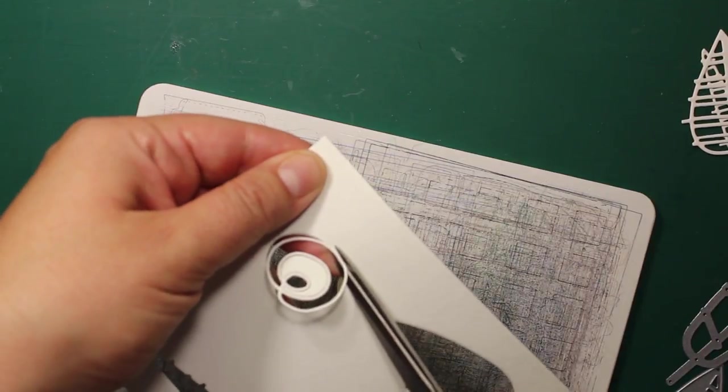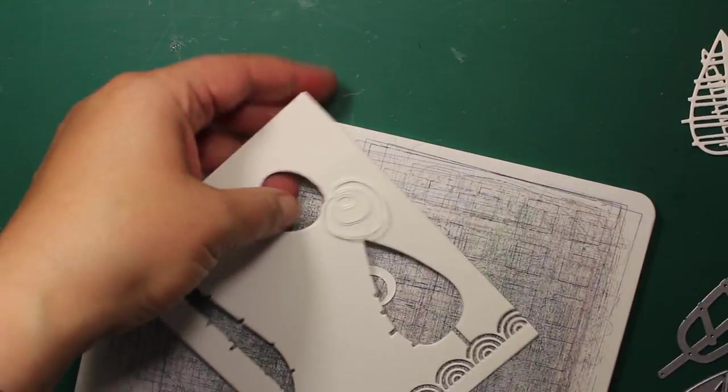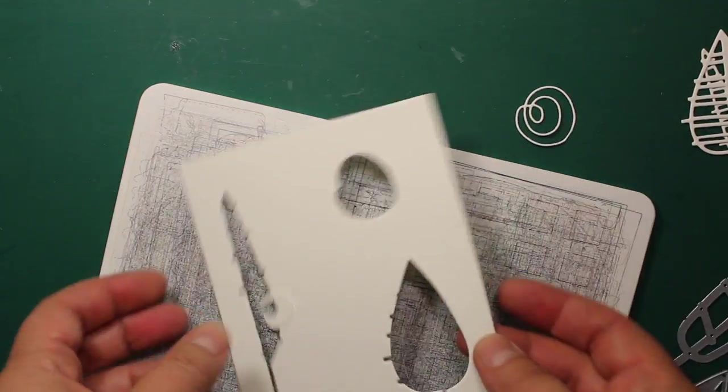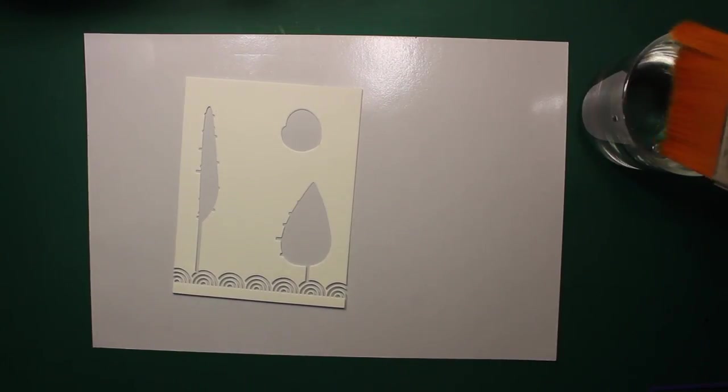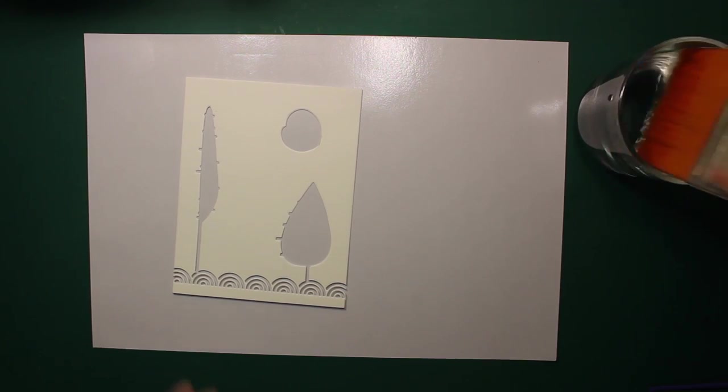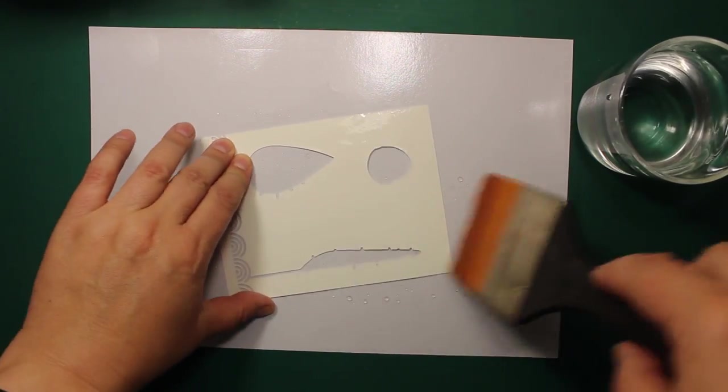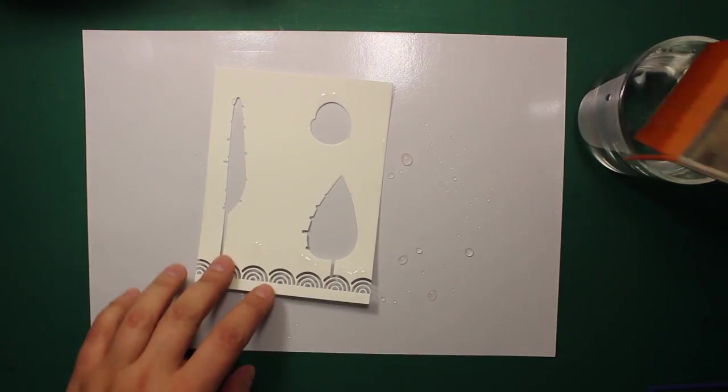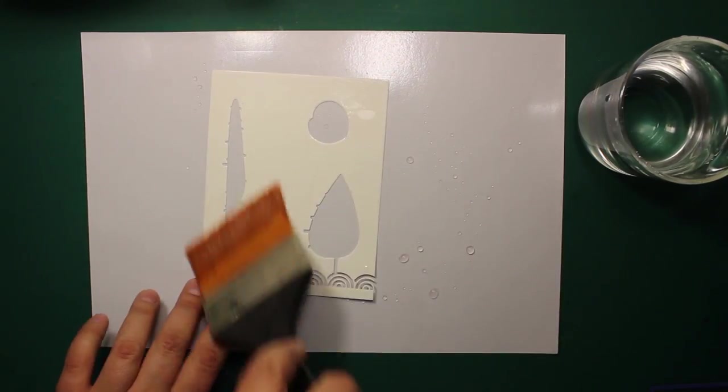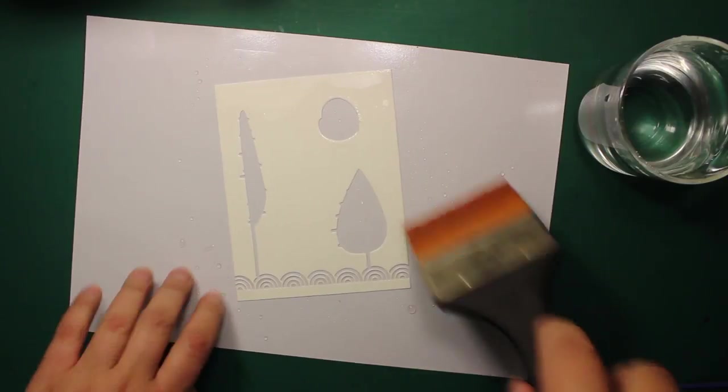I'm planning to turn these negative shapes into shaker windows later on. But before I do this I need to color the background first. I'm placing my panel on a non-stick sheet and then I'm applying water at both sides of the paper. This way the paper will not be curling up while you're coloring.